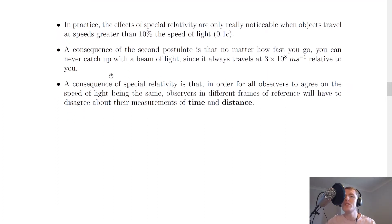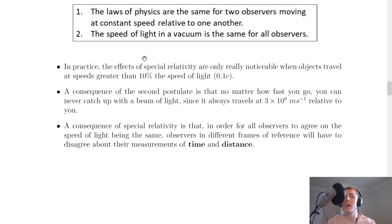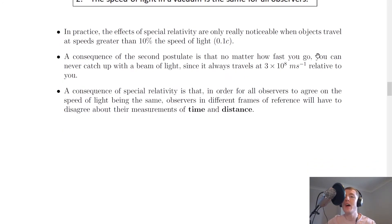It then says that a consequence of the second postulate, so this one here, that the speed of light in a vacuum is the same for all observers, is that no matter how fast you go, you can never catch up with a beam of light, since it always travels at 3 times 10 to the 8 meters per second relative to you.